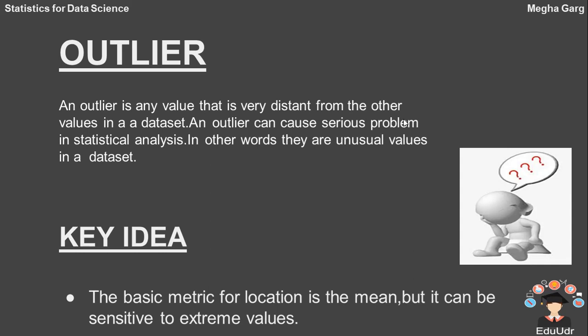Our last but not least, an outlier. Outlier is a value that is very distant from the other values in a data set. An outlier can cause serious problems in statistical analysis. In other words, they are unusual values in a data set. Still, outliers are often the result of data errors such as mixing data of different units or bad readings from a sensor. When outliers are the result of bad data, the mean will result in a poor estimate of location while the median will still be valid. In any case, outliers should be identified and are usually worthy of further investigation.